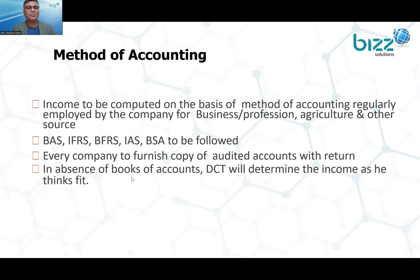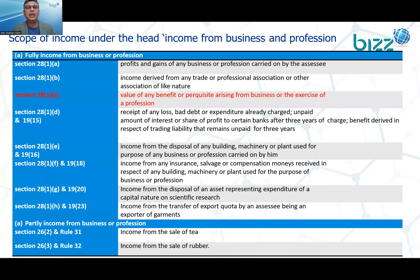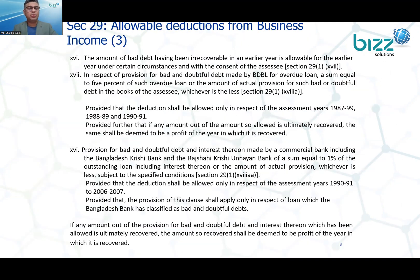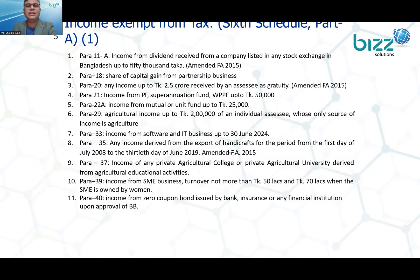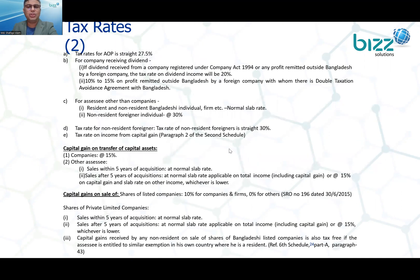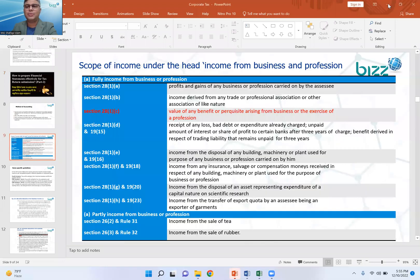If we have books of accounts, we have to do the best of the DCT as far as he or she thinks fit. In the absence of the books of accounts, the DCT will determine the income as far as he or she thinks fit. That is very challenging for us. Let's see what we have done in the first practical session, which combined practical with some theoretical aspects.